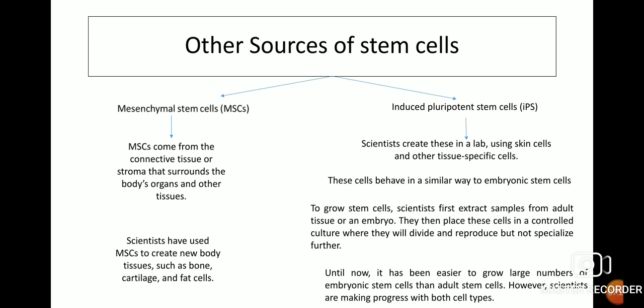Other sources include mesenchymal stem cells and induced pluripotent stem cells. Mesenchymal stem cells come from connective tissue or stroma surrounding the body's organs and tissues; scientists have used them to create new body tissues such as bone, cartilage, and fat cells. Induced pluripotent stem cells are created in a lab using skin cells and other tissue-specific cells and behave similarly to embryonic stem cells. To grow stem cells, scientists extract samples from adult tissue or an embryo and place them in a controlled culture where they divide and reproduce but do not specialize further. It has been easier to grow large numbers of embryonic stem cells than adult stem cells, though scientists are making progress with both.